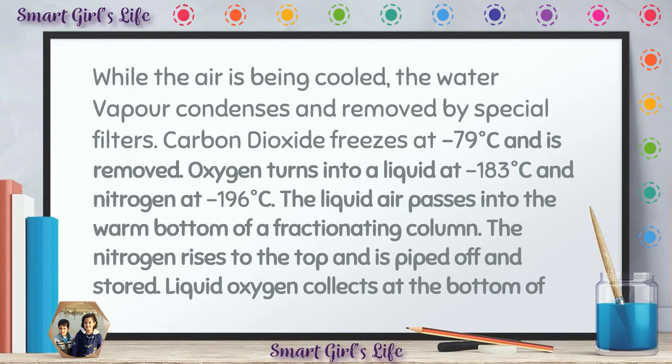Oxygen turns into a liquid at minus 183 degrees centigrade and nitrogen at minus 196 degrees centigrade. The liquid air passes into the warm bottom of a fractionating column. The nitrogen rises to the top and is piped off and stored.